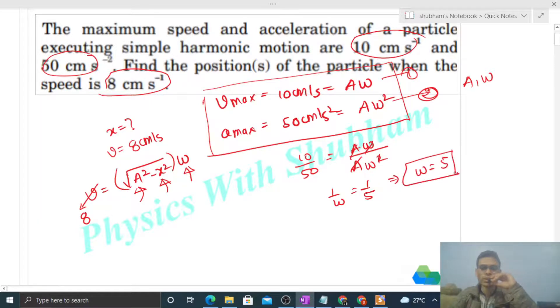Now omega value we can put in one equation. Let's say the first equation. So 10 will be A into omega, which is 5. So A will be 2.